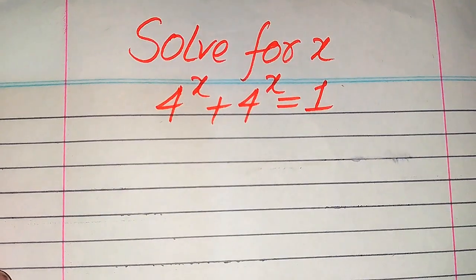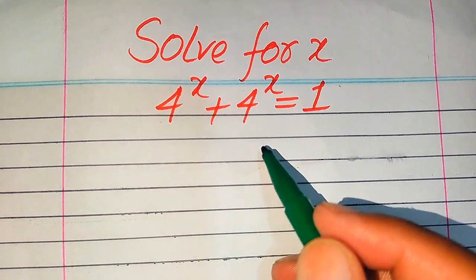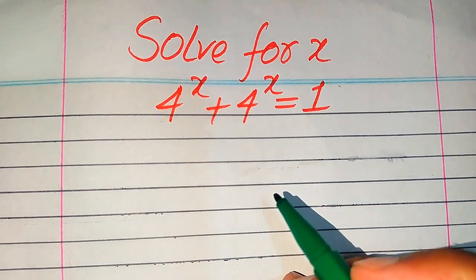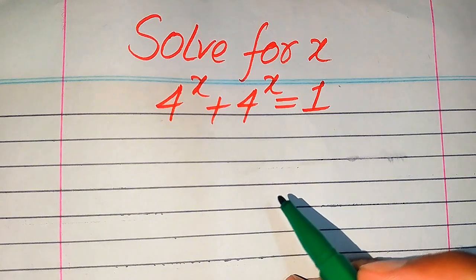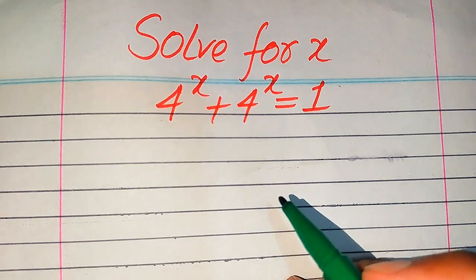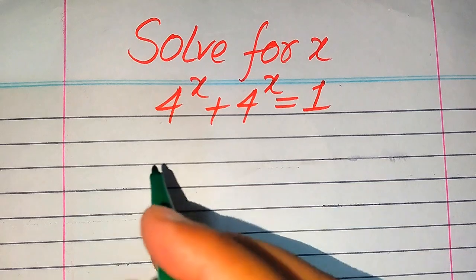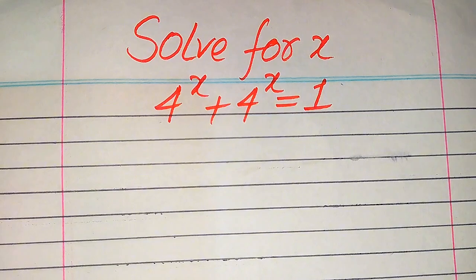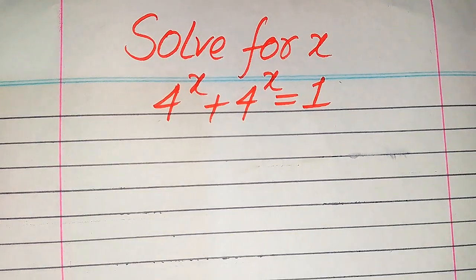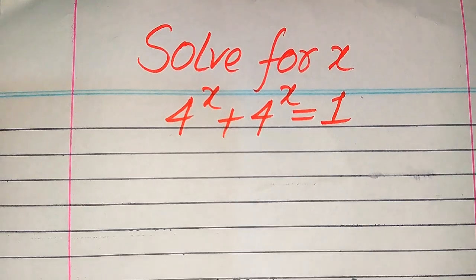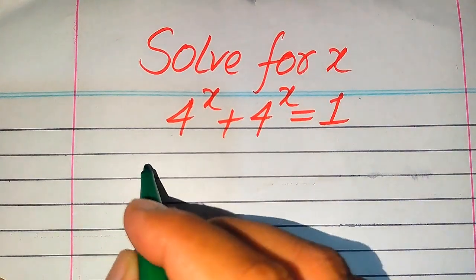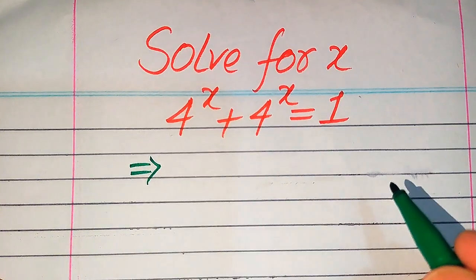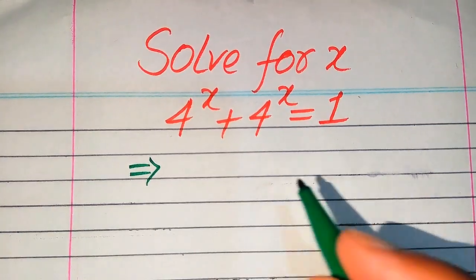Hello everyone. How to solve this problem for the values of x if we have 4 to the power of x plus 4 to the power of x equals 1, and we solve this problem for all the values of x. First we find all the roots of this equation and at the last we will verify which of the roots satisfy the given question statement and which of the roots are extraneous roots. I hope you like this method, but if you have any other method in mind, please don't hesitate to write it in the comment section.